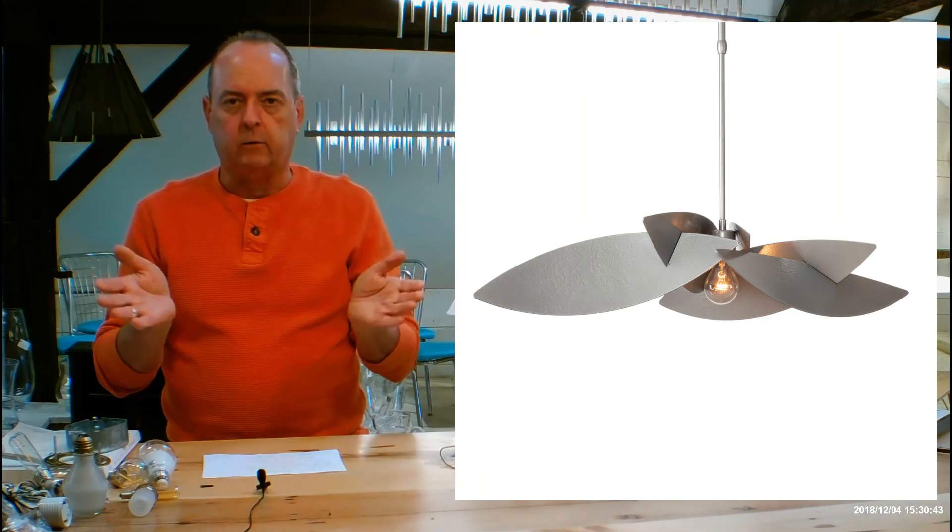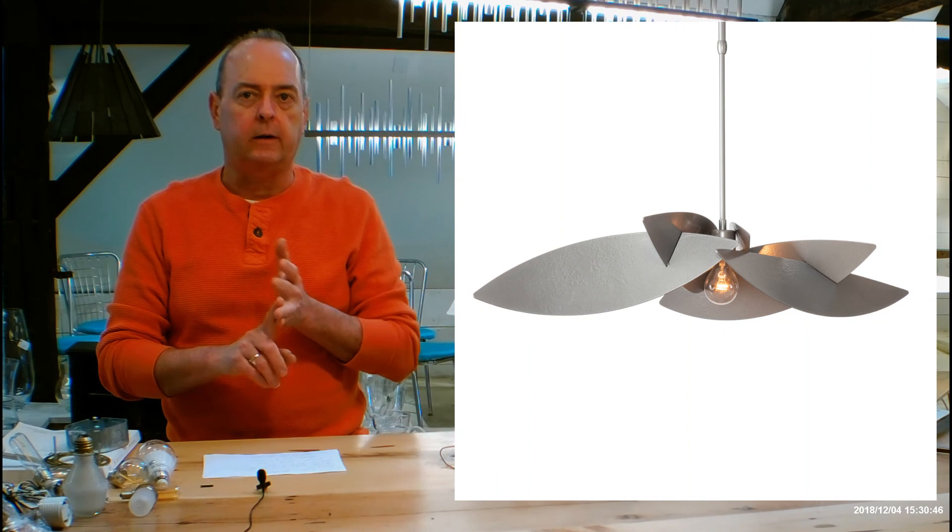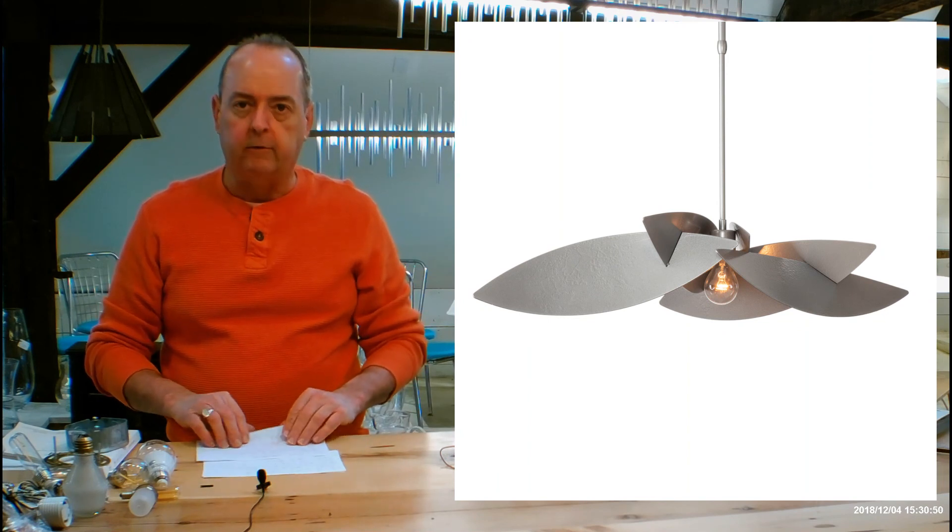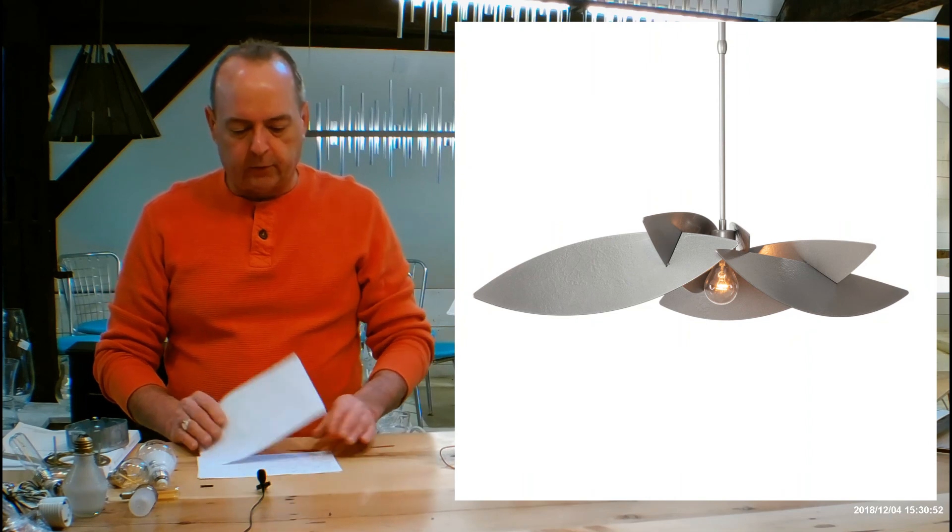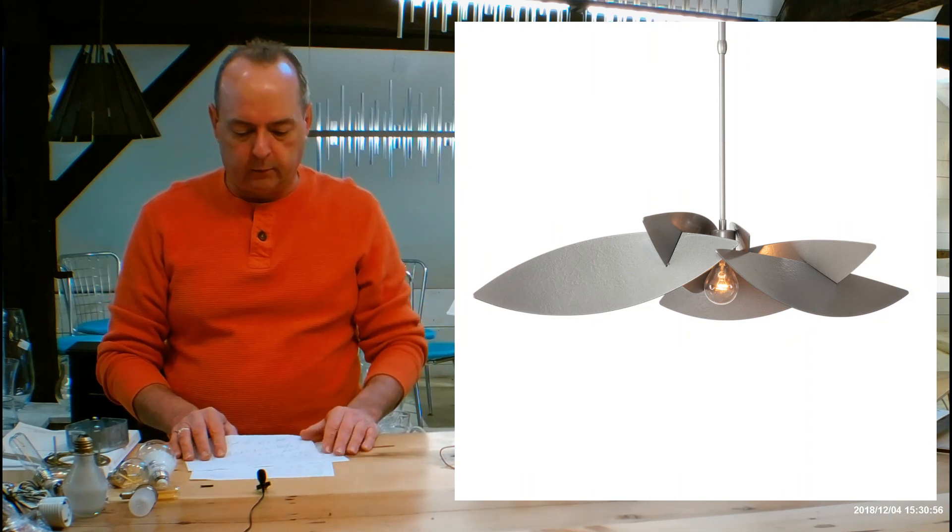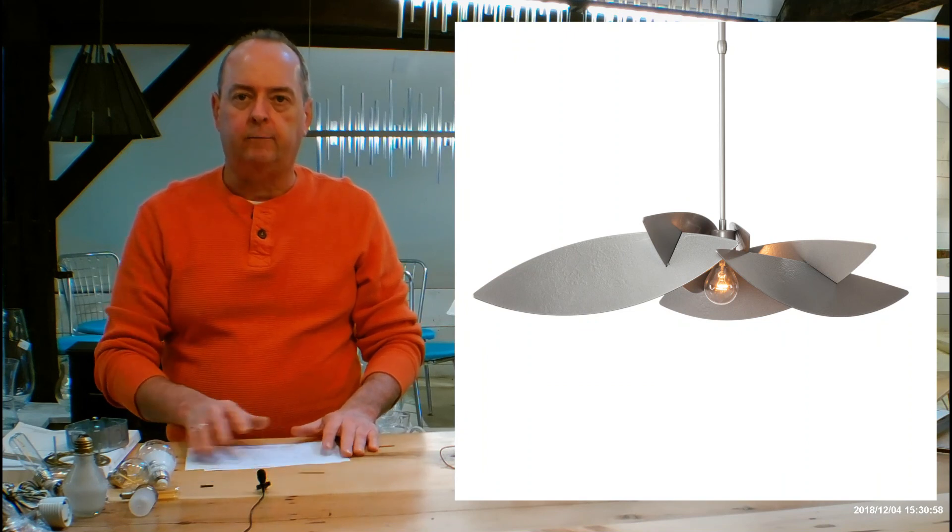So I think that covers everything on this fixture. If you guys have any questions let me know. There's also a two light and a three light version of this, so check those out too. You might be doing the one lights over your island and maybe a three or a two light over your dining room table or breakfast table. That would be pretty cool. Any questions, let me know and have a great day. Thanks, bye bye.